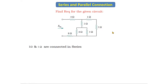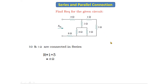In the first step, if we observe the circuit, this 1 ohm and this 5 ohm resistor are connected in series. There is no current dividing between them, so they are in series. When two resistors are connected in series, the formula is R = R1 + R2. So 1 + 5 = 6 ohms. We will replace this 1 ohm and 5 ohm with 6 ohms.